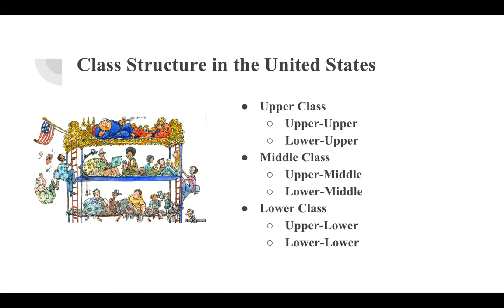Social class in America is divided into three sections, labeled the upper, middle, and lower class. The upper class is divided into both the upper-upper class, which is inherited wealth, and the lower-upper class, composed of celebrities. This class accounts for only 1.5% of the population; however, they are used in most advertising to appeal to the other social classes.